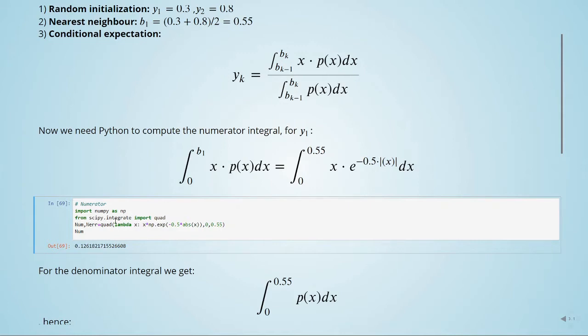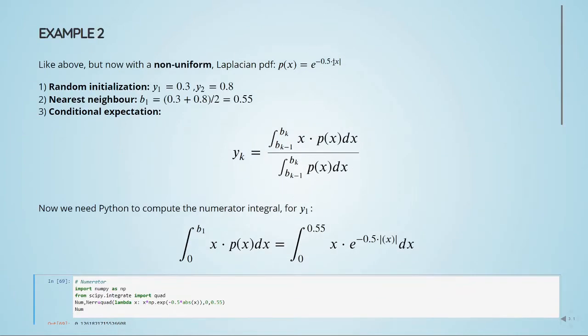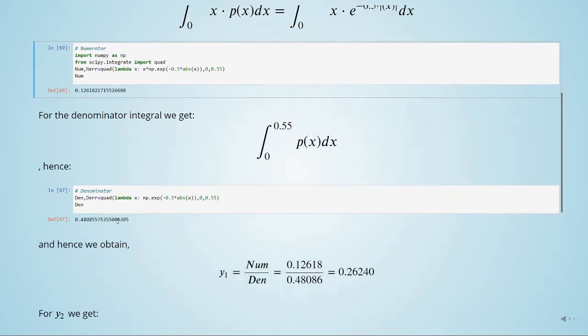When we use numpy to compute this, we have this value of 0.126 for the denominator. So this part here, we will have this here. We're replacing this by this function here.